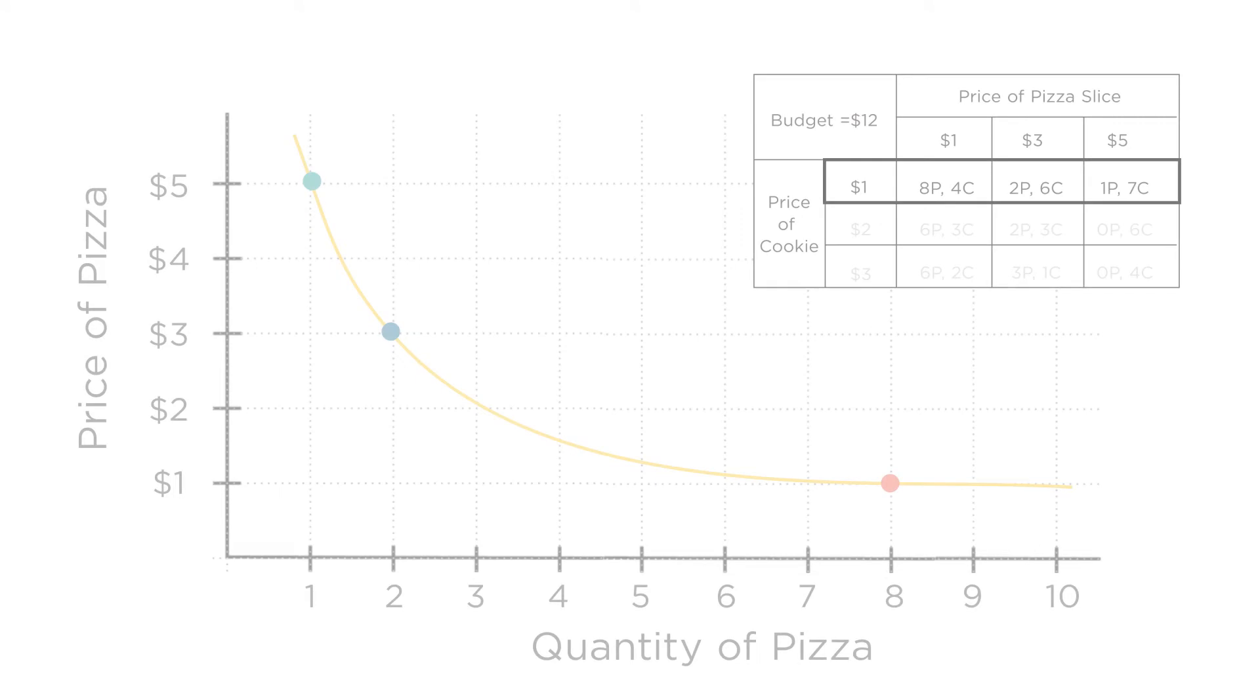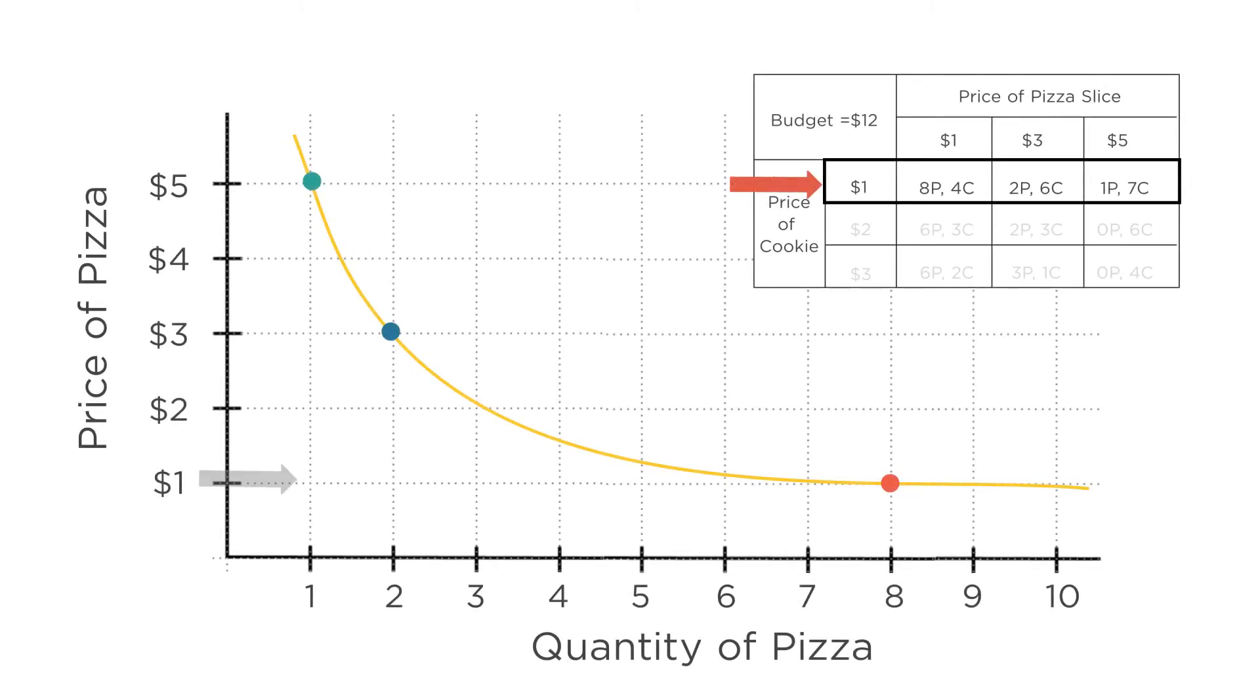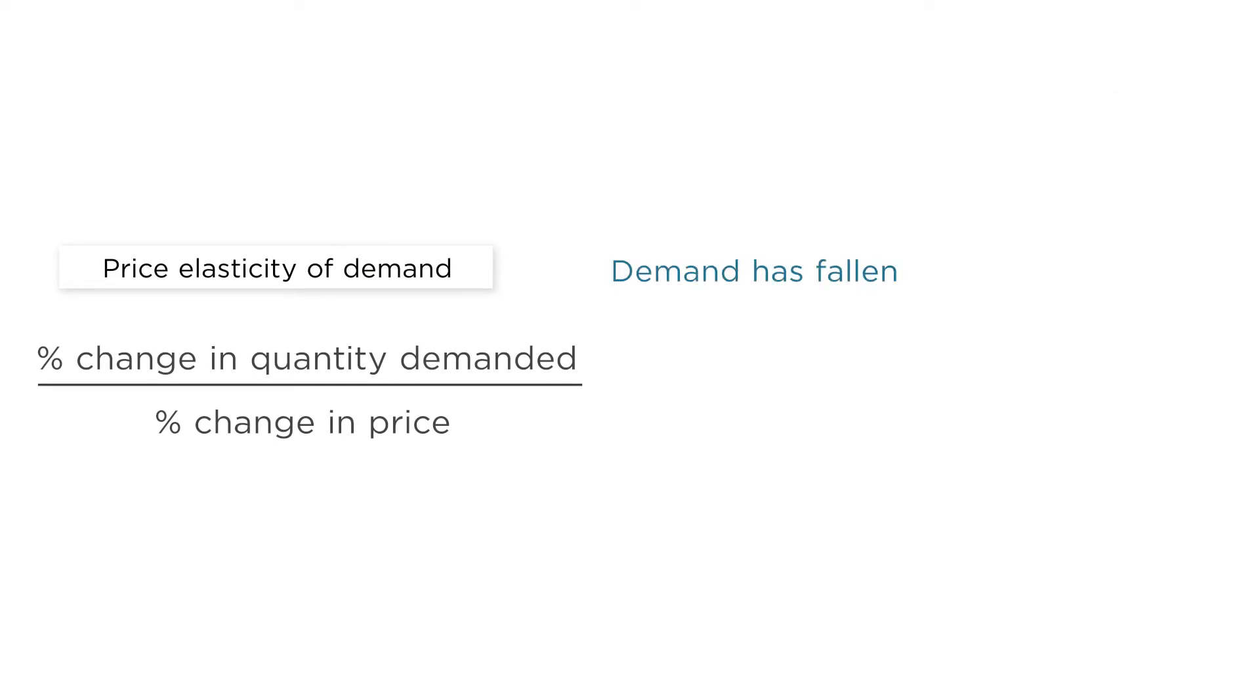Let's take the demand curve when cookies cost $1. When pizza slices are also $1, the demand is 8 slices. When the price of a slice jumps to $3, the demand drops to 2 slices. So demand has fallen from 8 to 2, a decrease of 75%. And the price has risen from 1 to 3, an increase of 200%. So the price elasticity of demand at this point on the demand curve is negative 75 divided by 200, or negative 0.375.